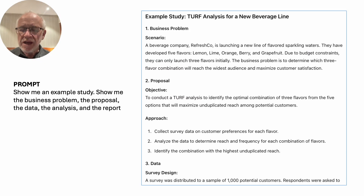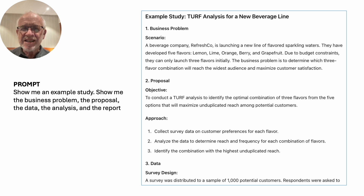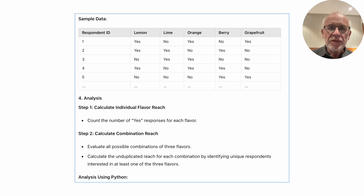Once I've got a sense of what's there, the next thing I'm going to do is ask ChatGPT to create an example study. Show me the business problem, the proposal, the data, the analysis and the report so I can see how a project is done from the beginning. It starts with the business problem and the sort of proposal we might write, then the data, and we go through the various processes.